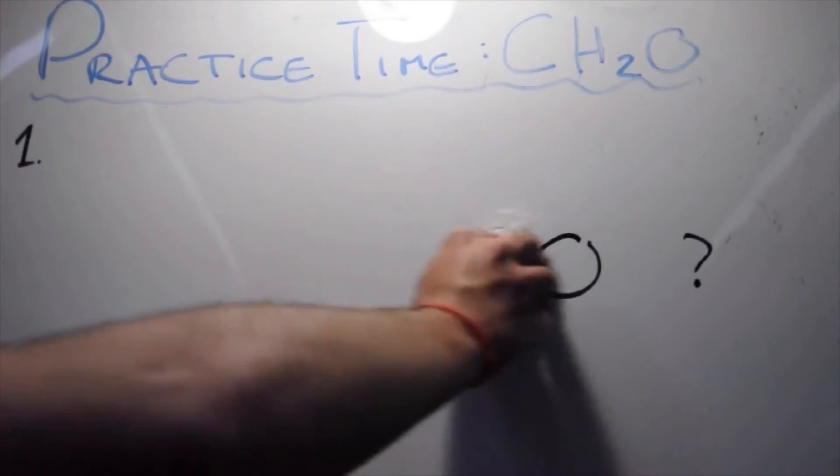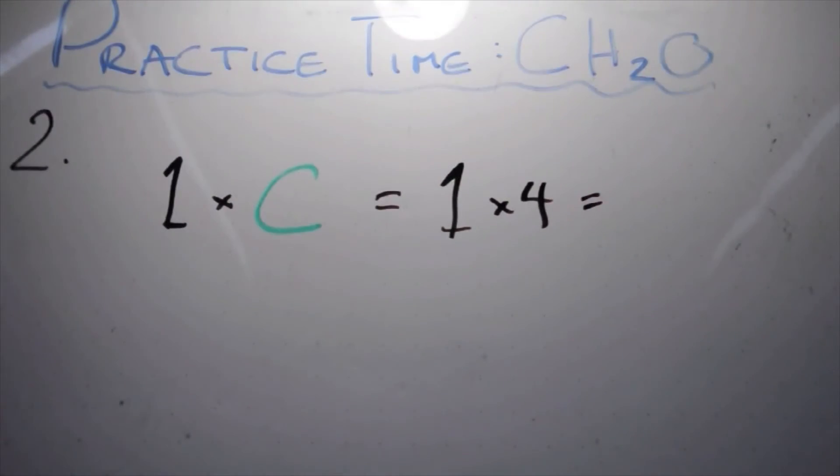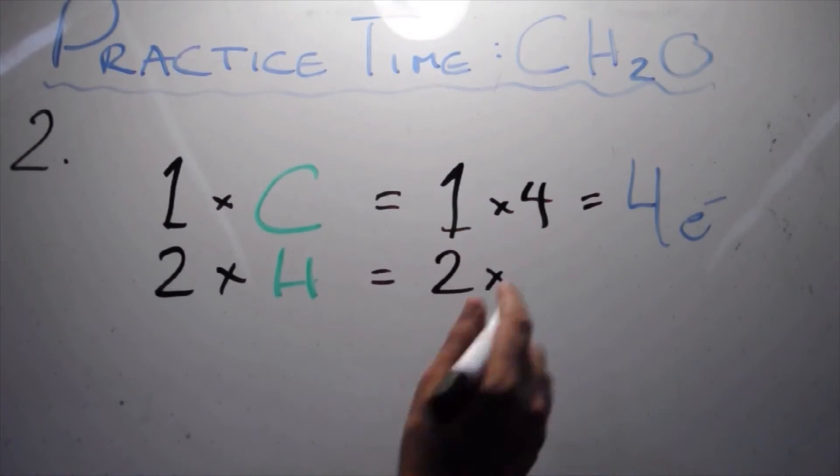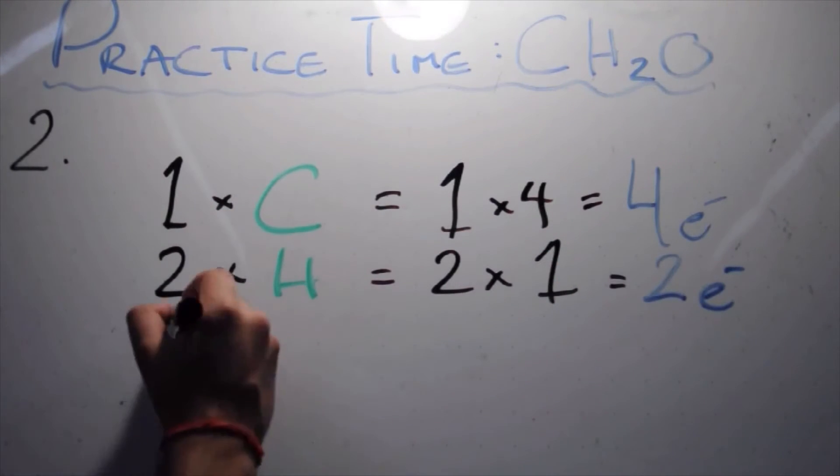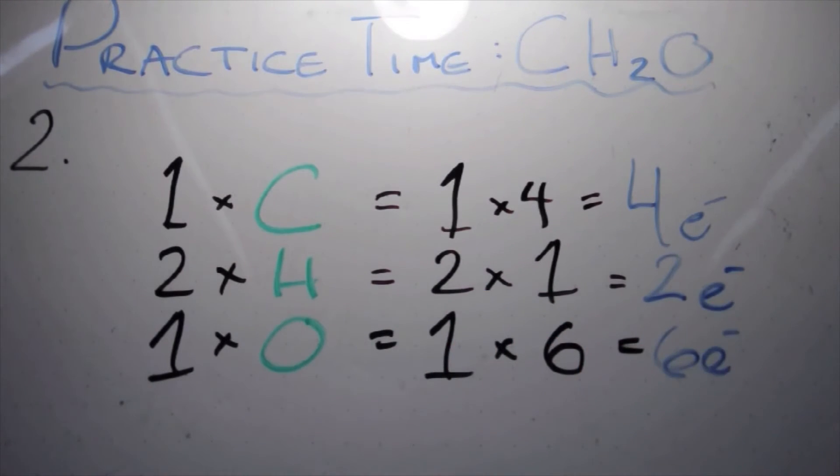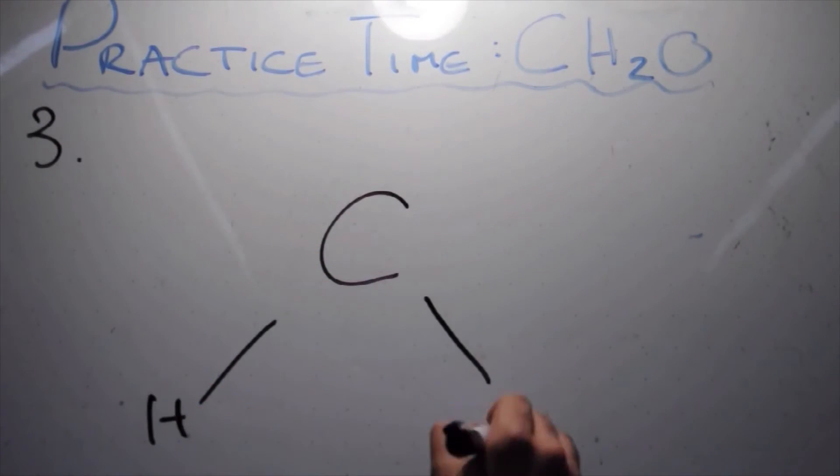Next, we will count the amount of valence electrons in this structure. Carbon brings 4 valence electrons, the two hydrogens each bring 1, totaling 2 valence electrons, and oxygen brings 6 valence electrons, totaling 12 valence electrons overall that will be in our Lewis structure. In the third step, we will place 2 electrons in each bond with carbon and oxygen, as well as with carbon and hydrogen.